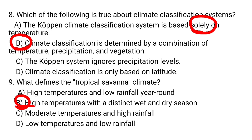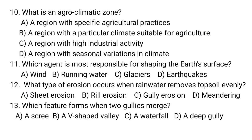Question number ten: What is an agro-climatic zone? A. A region with specific agricultural practices. B. A region with a particular climate suitable for agriculture. C. A region with high industrial activity. D. A region with seasonal variations in climate.